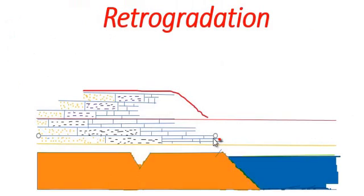Retrogradation is the landward migration of marine species. For example, limestone moves toward land. It is clear from this diagram.